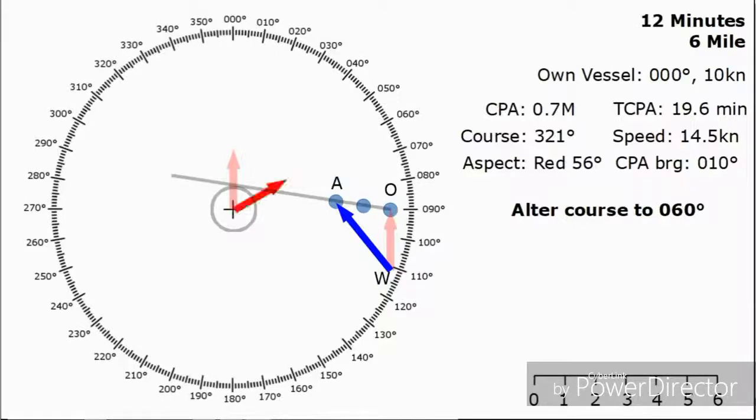We can put on our new vector. Our new vector is going to be the same length, we're still travelling at 10 knots, but it's now going to be pointing towards 060. That's going to be our new course. We can start to build up the rest of the diagram now.